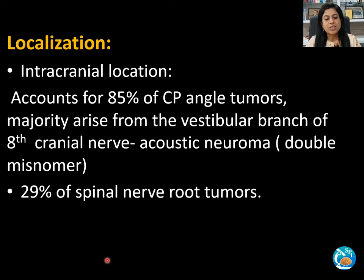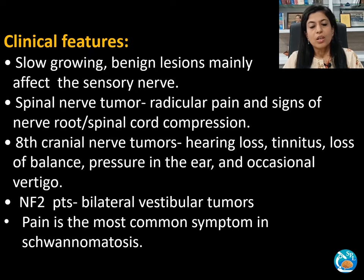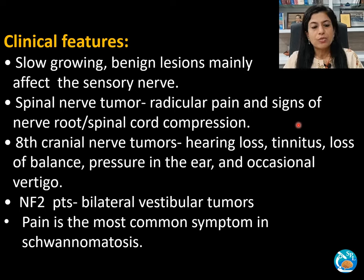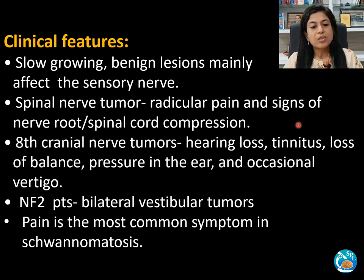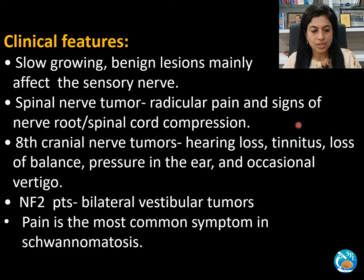Approximately 29% arise in the spinal nerve root. These are typically slow-growing benign lesions which mainly affect the sensory nerve. Spinal nerve tumor patients present with radicular pain and signs of nerve root or spinal cord compression. 8th cranial nerve tumor patients present with hearing loss, tinnitus, loss of balance, pressure in the ear, and occasionally vertigo.